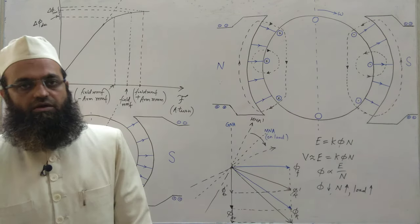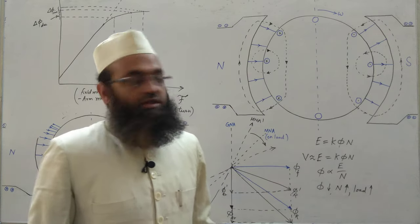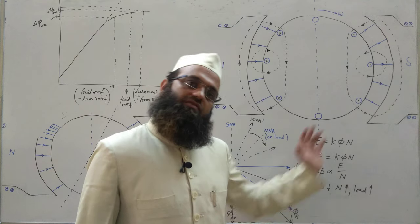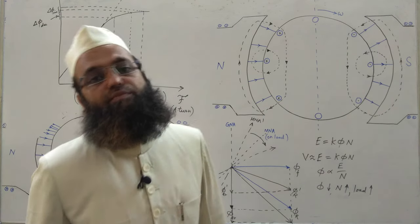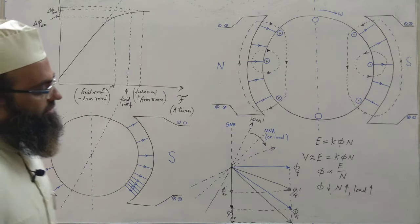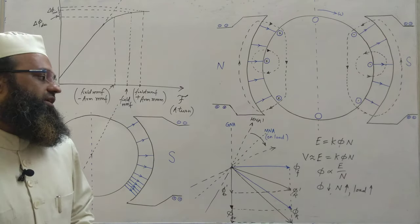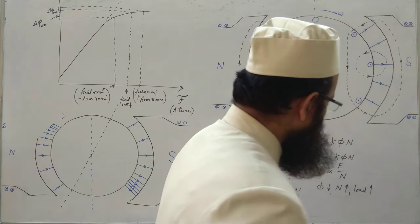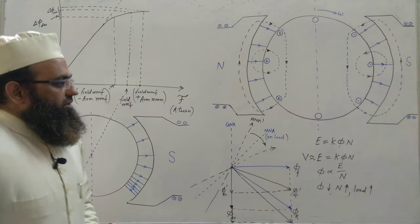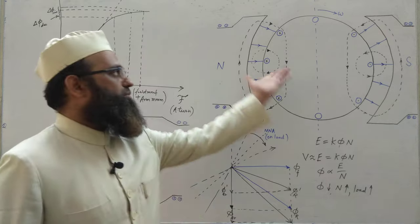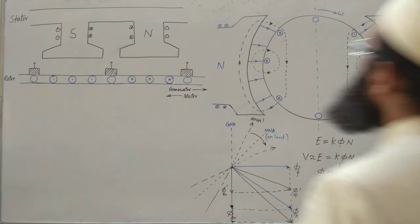If the armature current increases, armature MMF increases, further decreasing phi, further increasing speed N. This continuous decrease in phi and increase in speed repeats — a DC shunt motor may reach runaway speed. If the machine is not properly disconnected from the main line, it will destroy itself. This is the harmful effect of decreasing net flux with increasing armature current in the case of a motor.